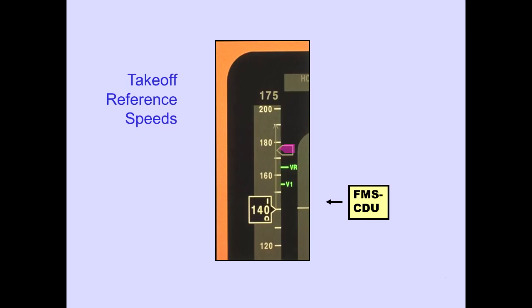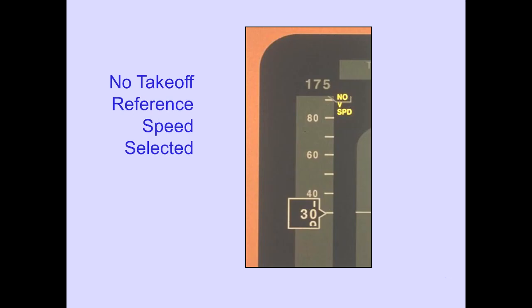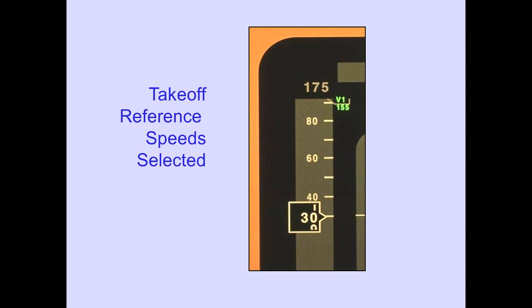Takeoff reference speeds, V1 and VR, as selected on the FMS-CDU, are displayed for takeoff. V2 is not displayed as text. When no takeoff reference speeds are selected, a no V-speed flag is displayed. When the V-speeds are selected, the flag will be replaced by V1 and the V1 speed, if the speed value is above the displayed tape values.